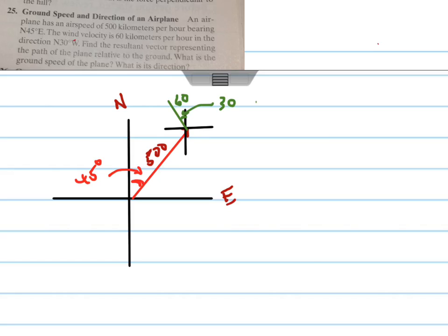And it wants us to find the resultant vector representing the path of the plane relative to the ground. So we're going to make this resultant vector purple. And it's going to be that one right there, roughly. And so we want to find out what that distance is and what the angles and all that kind of stuff are. Let me redraw that one so it's a little bit better. All right.